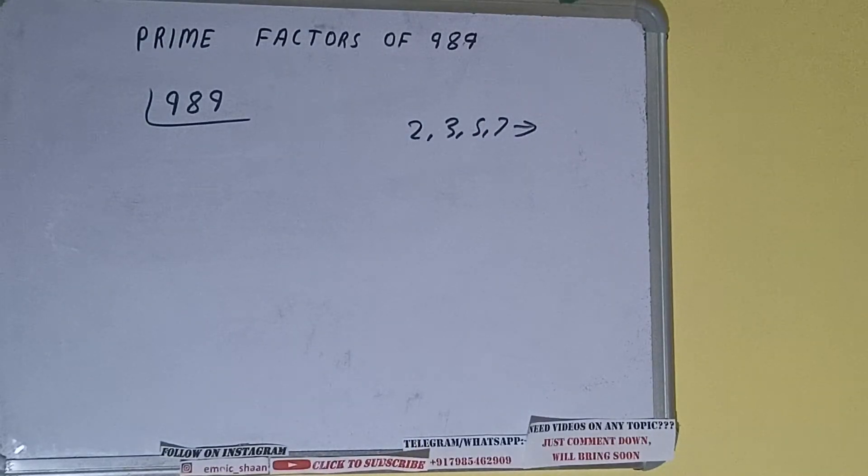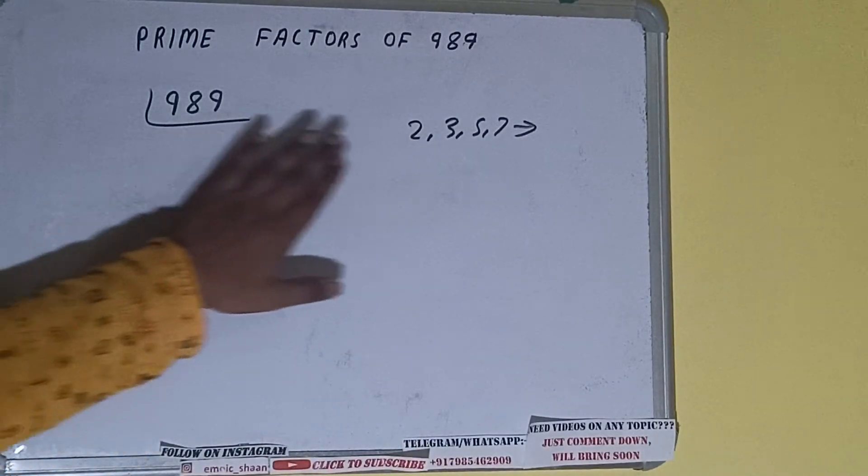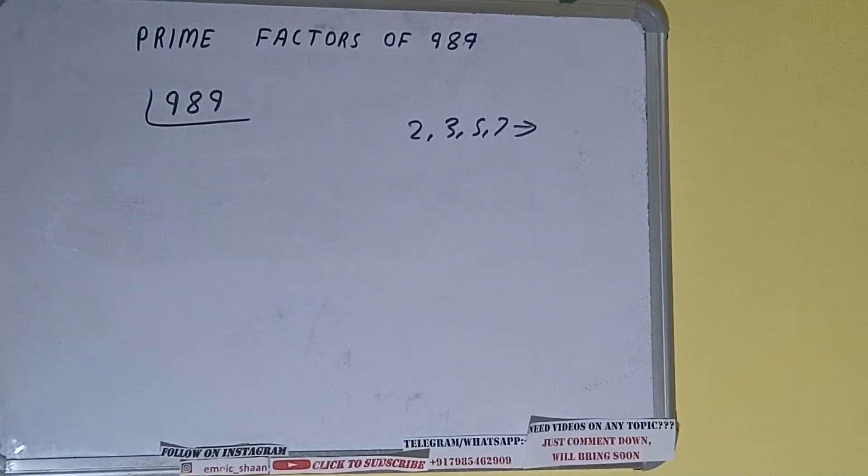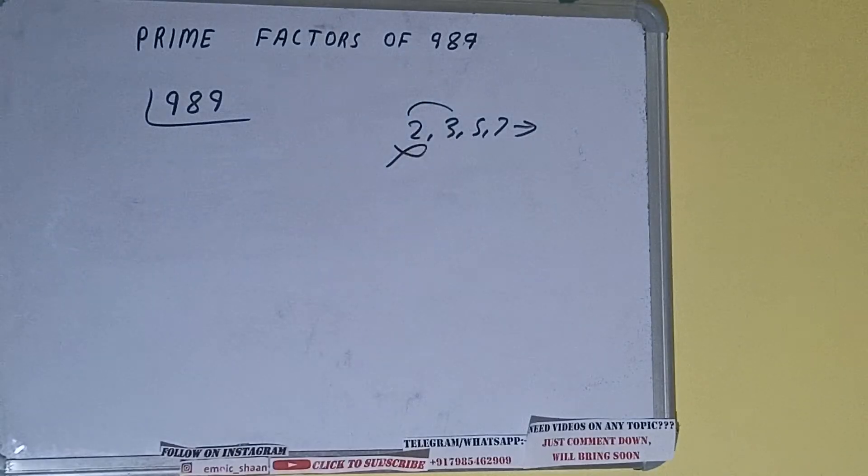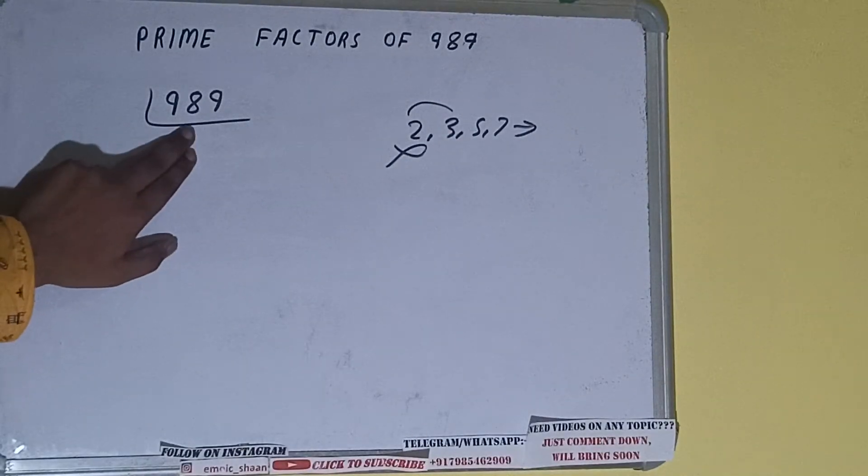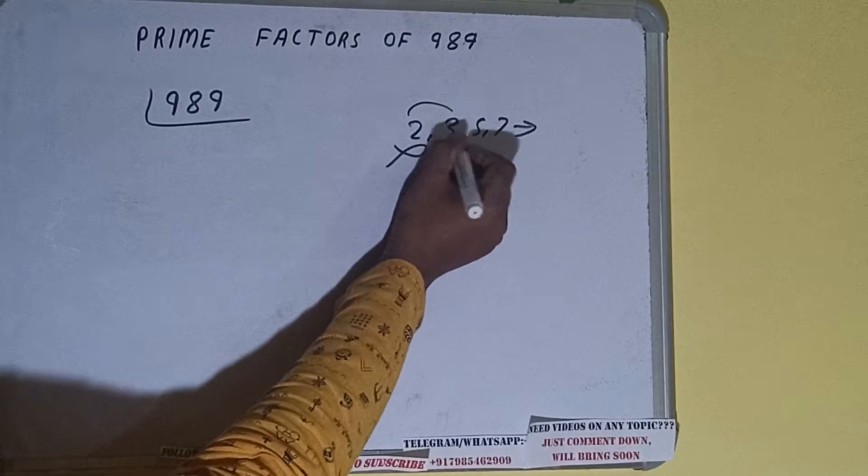We'll check with the lowest prime number, which is 2. Is 989 divisible by 2? No, it is not because the number is odd. We'll check with the next lowest prime number, which is 3. 3, 9, 3, 2, 6, 2, 9. It is not divisible by 3 also.